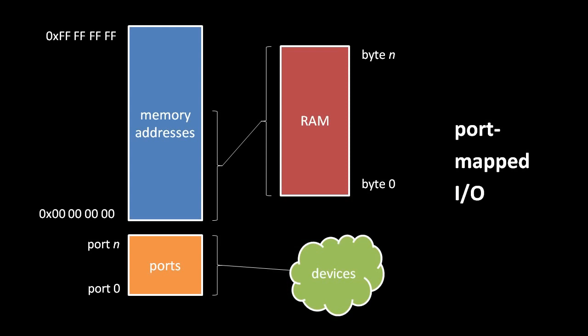Whether a system uses port-mapped or memory-mapped I/O, or even a combination of the two as x86 systems do, the next question is how programmers know which addresses and ports are mapped to what. On some systems, these mappings are all hardwired and documented by the hardware makers, but on other systems — including PCs — many mappings are dynamically configured at system startup. Either way, most programmers don't really have to worry about device ports and addresses because, as we'll discuss later, direct communication with the devices is handled by the operating system.